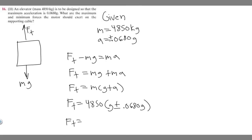What you should notice is that we can factor out a g again. So F_T equals 4850 times g times (1 plus or minus 0.0680). The g goes away from inside.